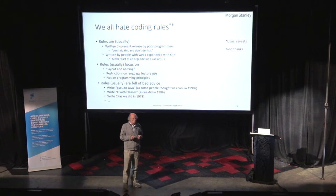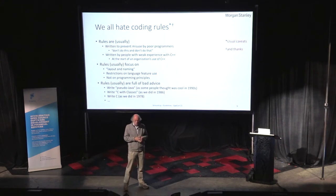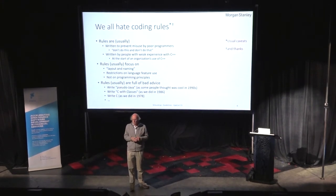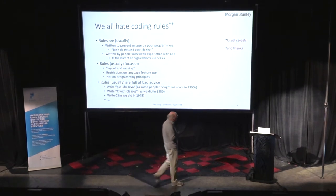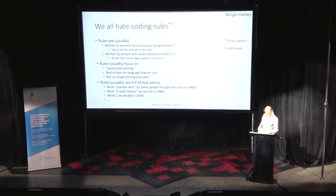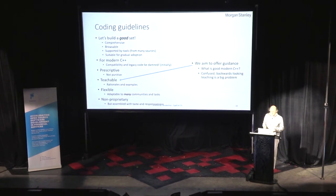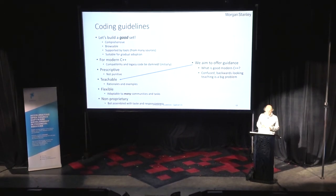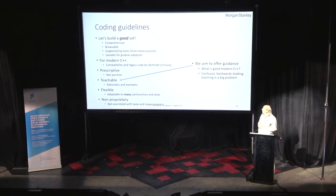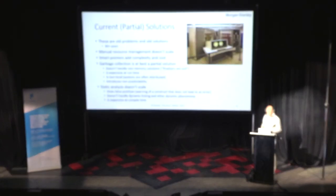The rules tend to get old and be full of bad advice. A lot of people have had coding guidelines that wanted you to write pseudo-Java. If you want to write Java, write Java. C with classes eliminates 20 years of progress in C++, or even worse, write C — which brings you back to about 1980. We need to do better. Modern C++ should be prescriptive, not punitive, and we want it teachable, flexible, and non-proprietary so we can work with people from other fields.